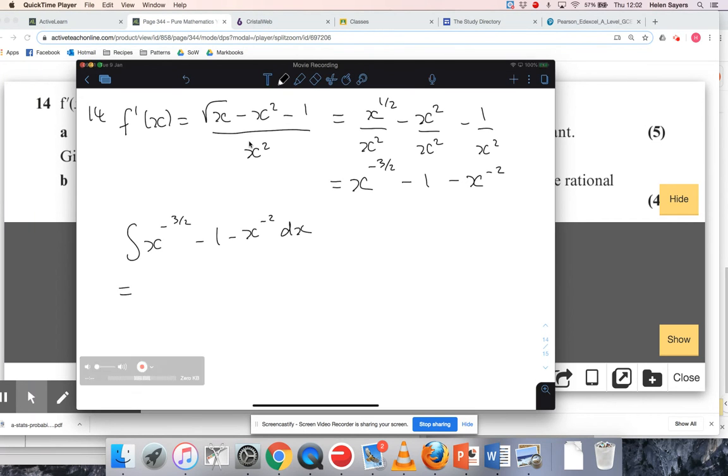So I think that's really the hardest bit, because the actual integration process isn't so bad. So I'm going to increase that power by one. So -3/2 plus one is -1/2. I'm going to divide by that new power. And dividing by -1/2 is just going to be the same as multiplying by -2. Minus one is going to integrate to minus x. And I'm going to increase that power to one. I'm going to divide by negative one. So that's just going to make it a positive. And then I've got the plus c.